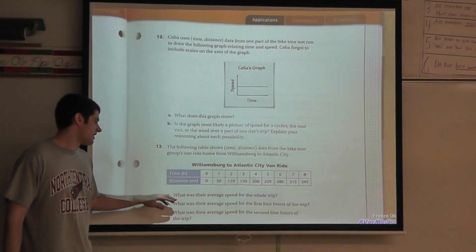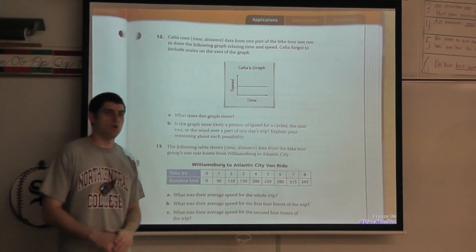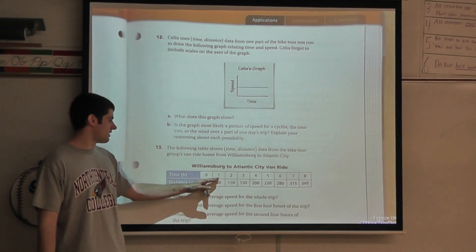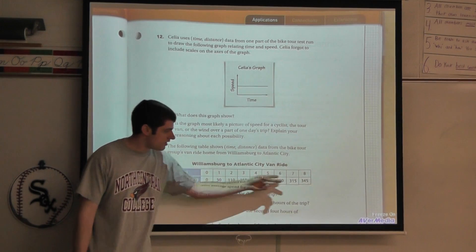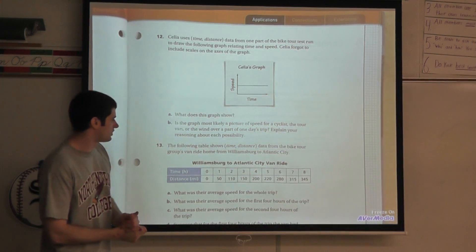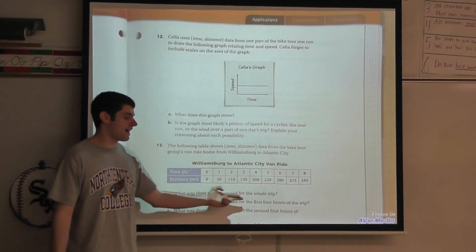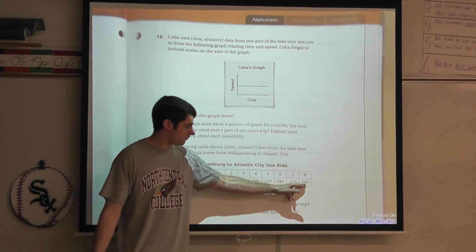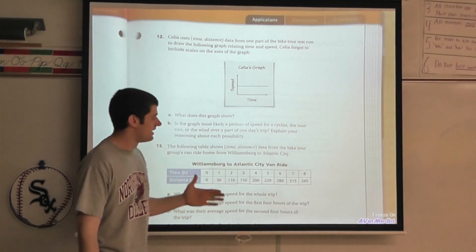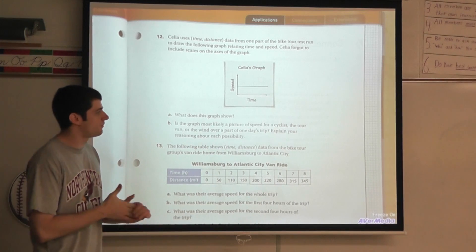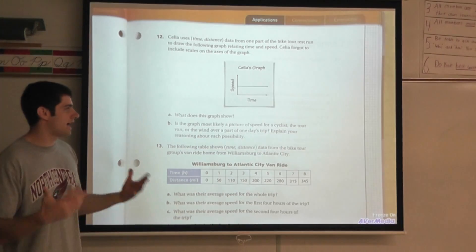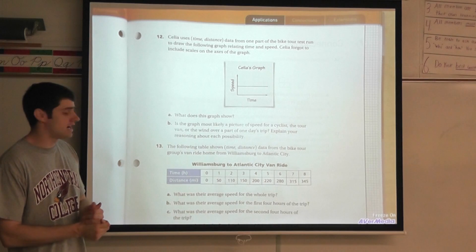All right, let's take a look at time and distance here. Question a says what is your average speed for the whole trip? I'm going to look, here's time and distance in hours and in miles. In the first hour they went 50 miles, second hour 110 miles. I can also look at the end here and see the total trip time is eight hours and the total miles is 345. So I'm looking for their average speed of the entire trip. I'm going to take 345 miles divided by eight hours to find miles per hour. And if I divide those two numbers I'm going to get 43.125 or 43 and 125 thousandths miles per hour.